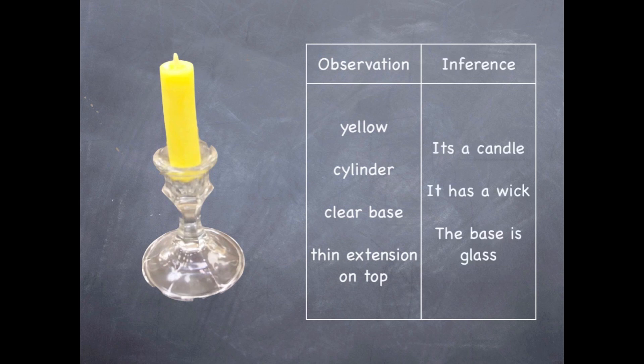Inferences you might have made about it were that it's a candle and that it has a wick and a base made of glass. As it turns out, some of your inferences may be wrong. It was, in fact, a piece of potato, as you can see when I ate it.